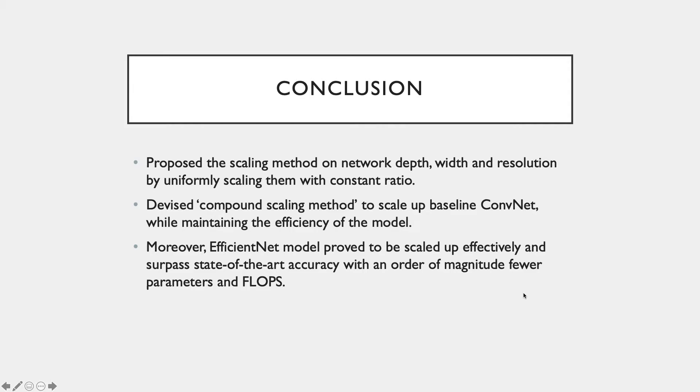So all in all, the authors have devised a scaling method by uniformly scaling the neural network depth, width, and resolution with a constant ratio instead of single-dimension scaling methods. They propose a simple yet highly effective compound scaling method which helps to scale up the baseline convolutional network to any target resource constraint in a more principled way while maintaining the efficiency of the model. Also, the EfficientNet model that has been developed proved to be able to attain state-of-the-art accuracy with much lower parameters and FLOPs compared to other convolutional networks.